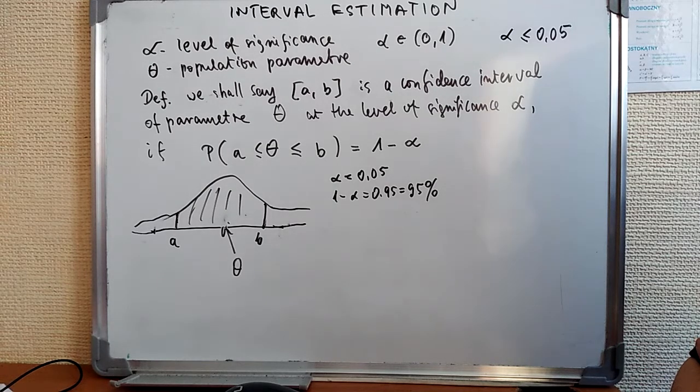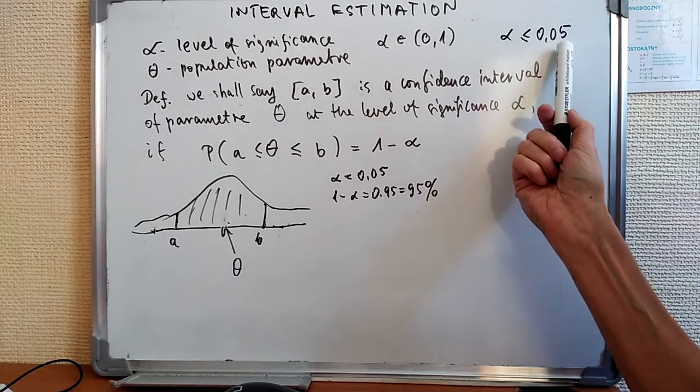The level of significance is a very important number in statistics. It's the number between 0 and 1. But practically, if you want to be a serious researcher, the level of significance should be not bigger than 0.05.